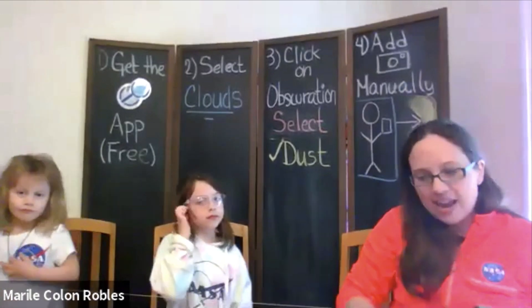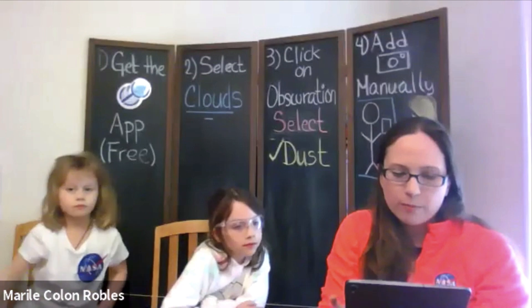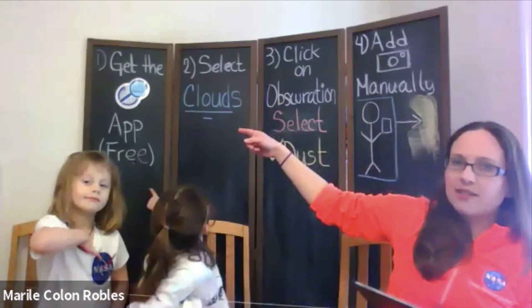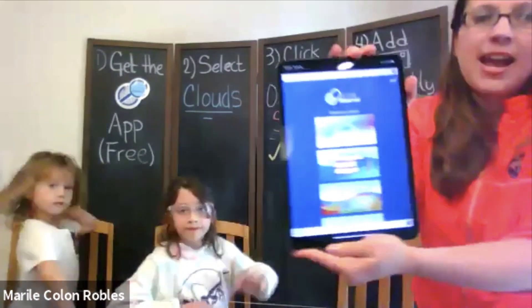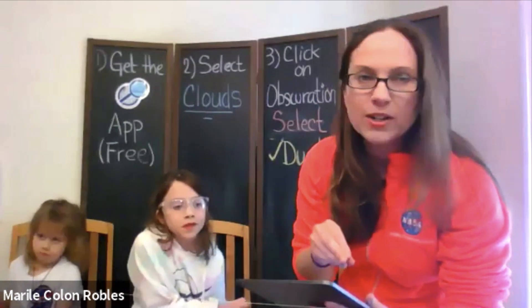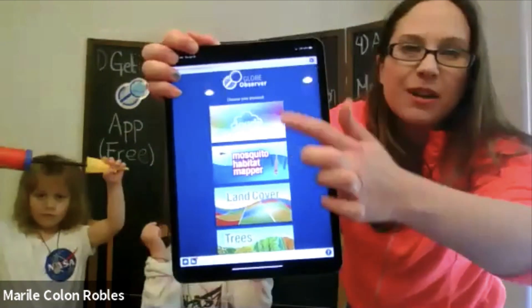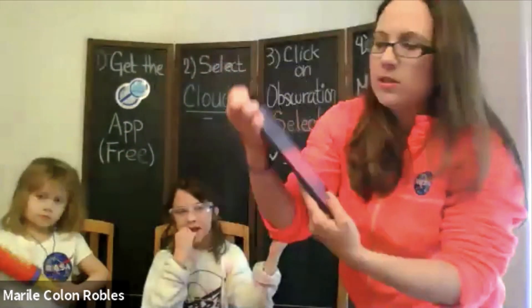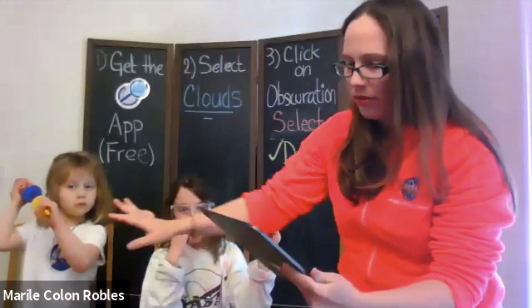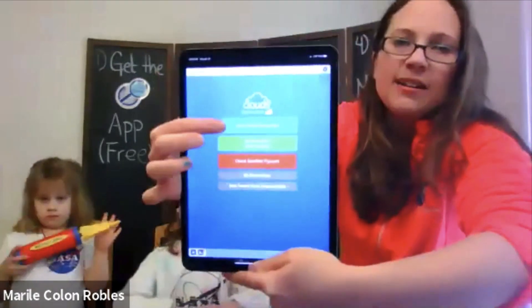It doesn't have to be super big, and again it can happen in cold places — maybe a dried-up farm or a riverbed that's nice and dry now. All those are new sources of dust. Step one: get the Globe Observer app. You can download it and change the language — it's available in different languages. It does require an email address for registration. Step two: select clouds. When you go to the app, you'll see different types of observations you can do — just click on clouds, and there'll be some instructions on how to do the observations. Then click on new observation.